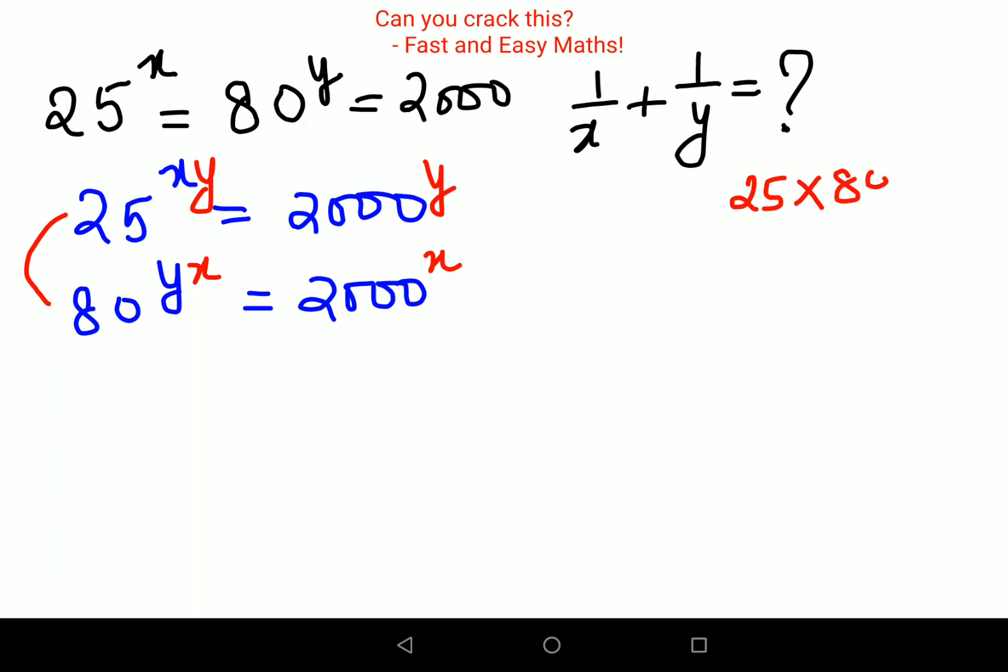Now if you look closely, when you multiply these two, 25 into 80 is actually coming out to be 2000. So let's multiply these two. We have 25 raised to xy into 80 raised to xy equals 2000 raised to y into 2000 raised to x.